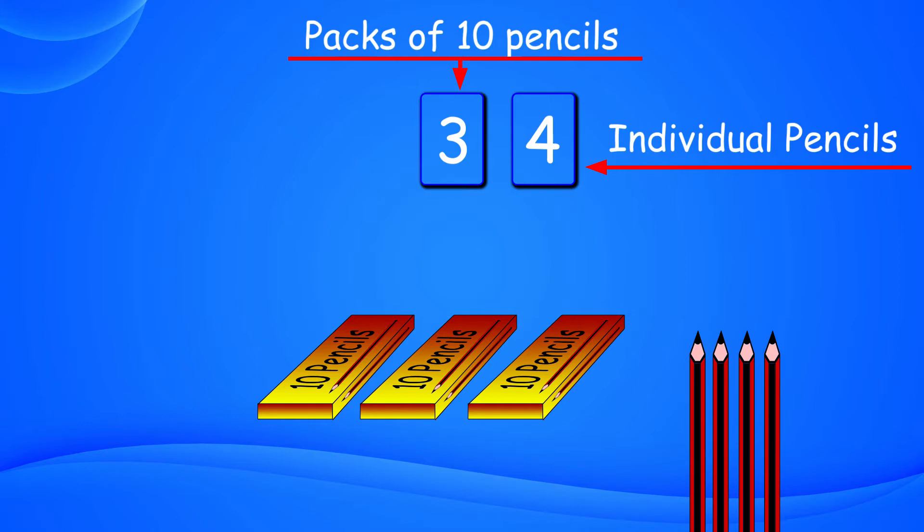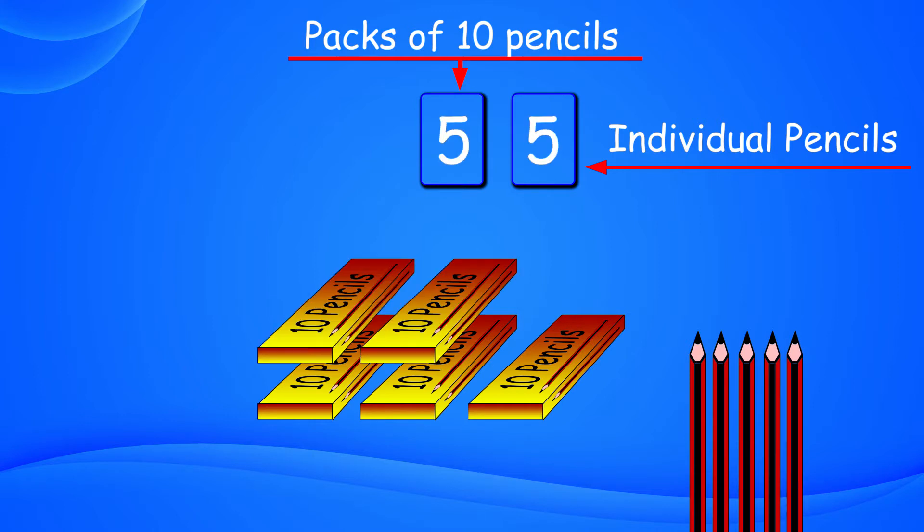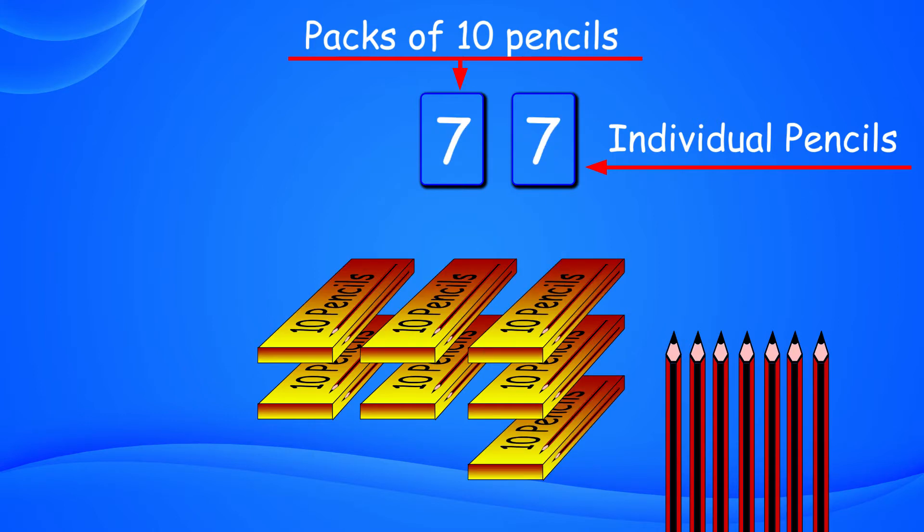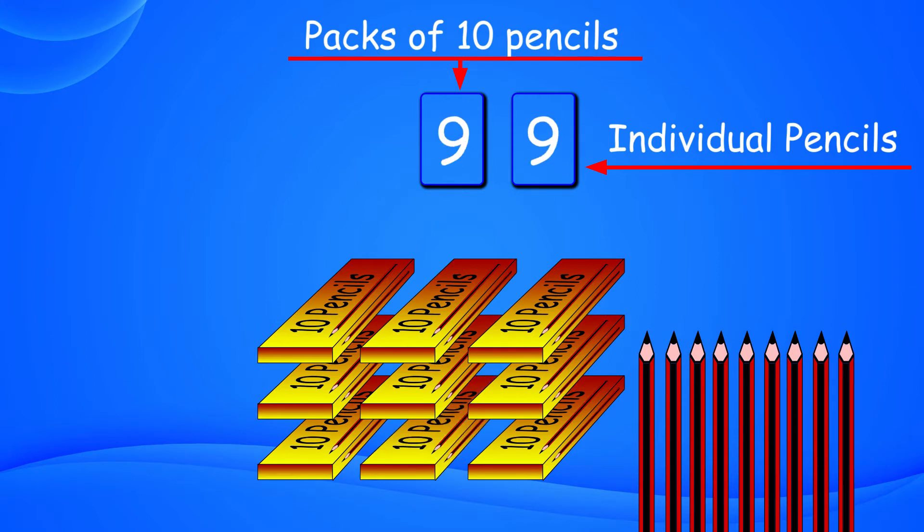Thus, we can show all the numbers till we reach the maximum digits in both the boxes, that is 99. What if we now add one more pencil? 100 in all.